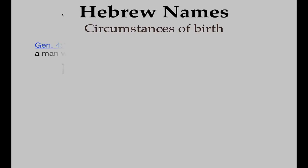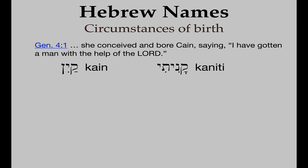The first example is Hebrew names related to circumstances of birth. In Genesis 4:1 it says she conceived and bore Cain, saying, 'I've gotten a man with the help of the Lord.' When she said 'I have gotten a man,' it's translated Kaniti — exactly the same root as the name Cain. It's used in modern Hebrew to purchase or buy. So it's a play on words: I've gotten Cain with the help of the Lord, and I'll name him after what the Lord helped me get.